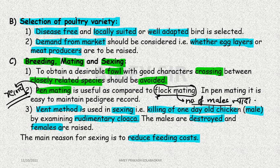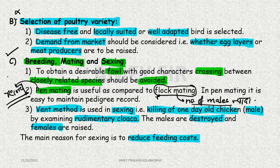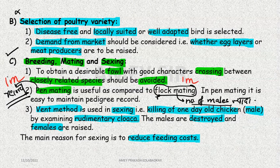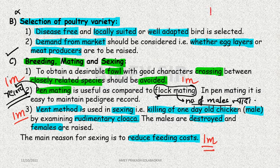Fewer questions come from this part; more come from here. Questions on pair mating can be set, the meaning of flock mating can be asked, one-mark questions on the vent method and its purpose can come, and all of these can also be used in multiple choice questions.